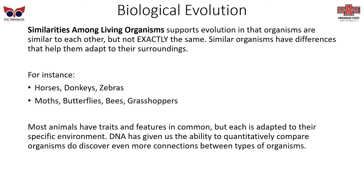There are also similarities among living organisms, which supports evolution. Organisms are similar to each other but not exactly the same — similar organisms have differences that help adapt them to their surroundings. For instance, consider horses, donkeys, and zebras: they're all very similar in leg structure and general body shape, but their coloring and details are different because zebras live on the savannah where stripes are helpful. Similarly, moths, butterflies, bees, and grasshoppers all share similarities — a head, abdomen, and thorax — but have differences depending on their environment and biome. DNA has given us the ability to quantitatively compare organisms and discover even more connections between types of organisms.